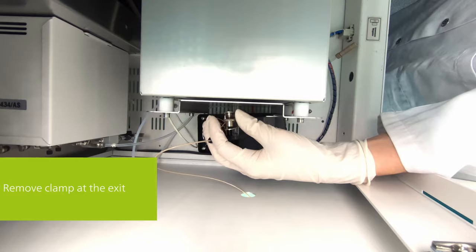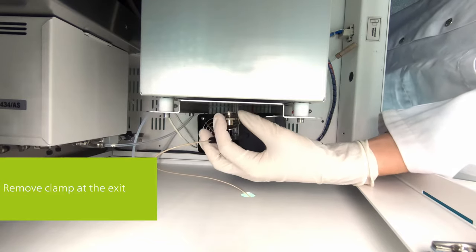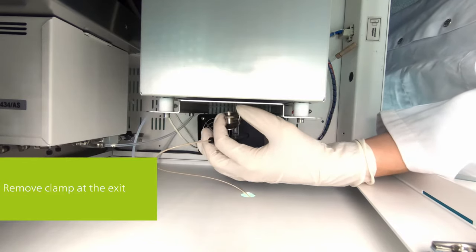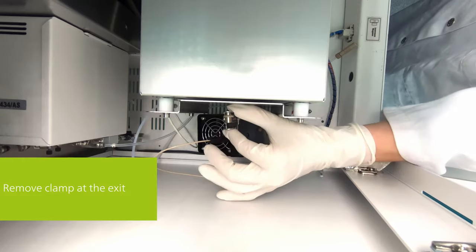In a second step, remove the clamp at the exit of the combustion tube and separate the ball joints of the tube with the cool T-connector.